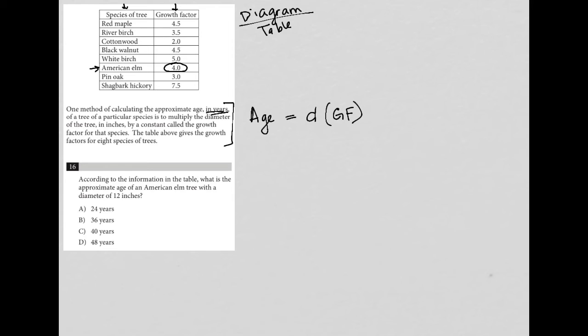And the question tells us that the American elm tree has a diameter of 12 inches. Again, what's diameter in inches? Yes, we always want to make sure our units are correct.